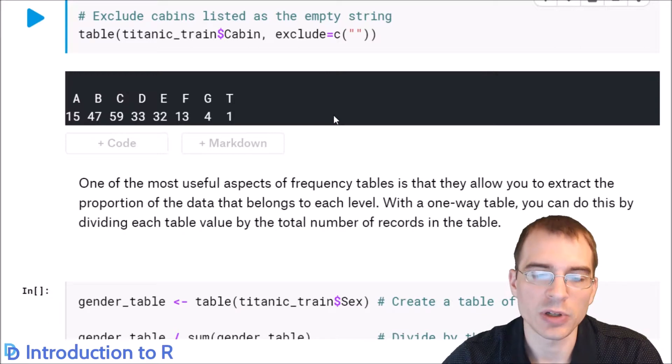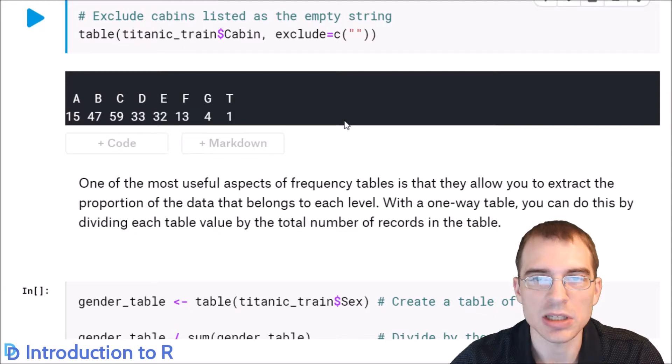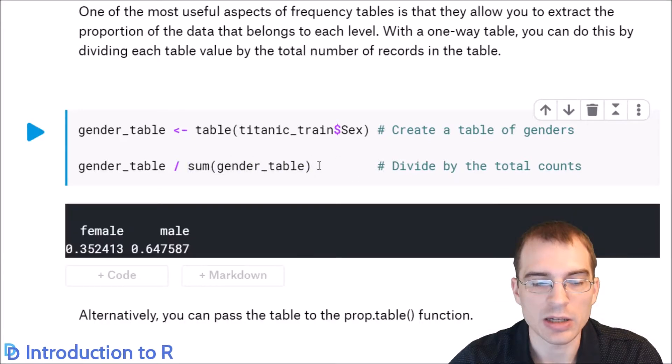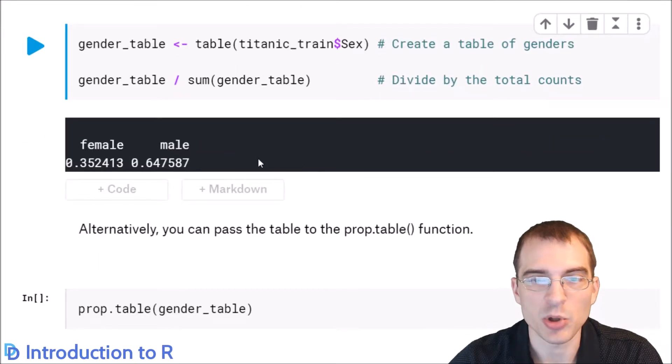One of the most useful aspects of frequency tables is that they allow you to extract the proportion of the data that belongs to each category. So with a one-way table, we can do this by dividing the table by the total number of records in the table. So you can do that by hand, essentially, by carrying out that division. We're going to make a table of the gender counts, and then we're just going to divide that table by the total number, which is the sum of the table. And when we run that, we see the proportions. So about 65% of the passengers in the dataset were male, and about 35% were female.